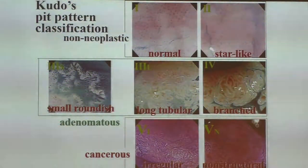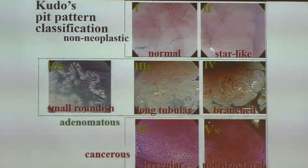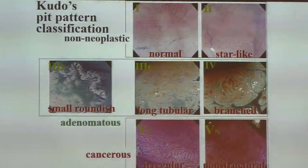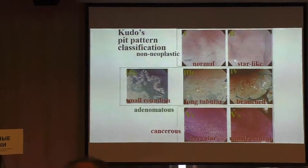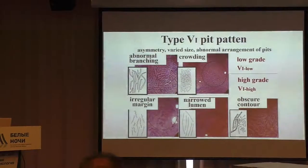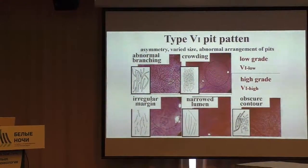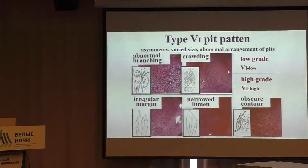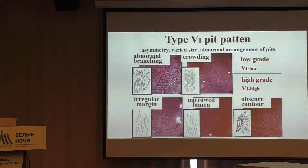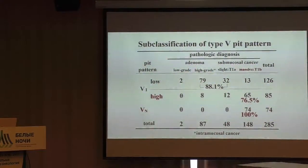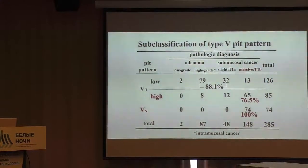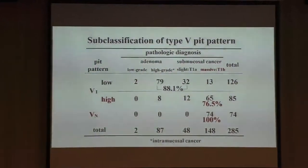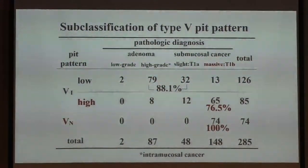You know the Kudo pit pattern classification — type 1 to type 5. Type 5 is subdivided into two: 5I, irregular type, and 5N, non-structural type. Type 5I is further divided into low-grade and high-grade. Low-grade is a slightly irregular pit pattern, and high-grade is a highly irregular pit pattern. It is important because lesions with a highly irregular pit pattern can be deeply invasive, so maybe you had better send those lesions to surgery. But lesions with a slightly irregular pit pattern can be treated endoscopically.